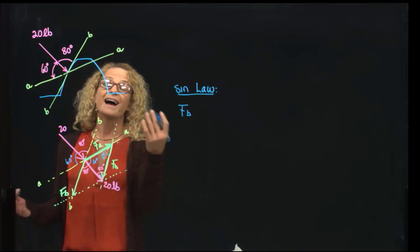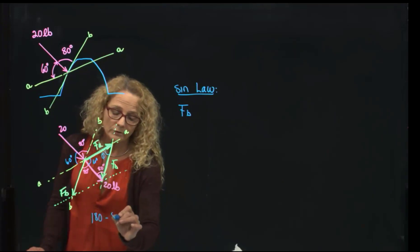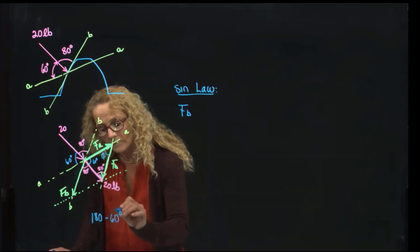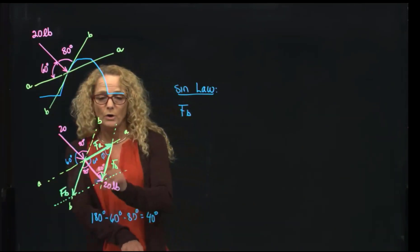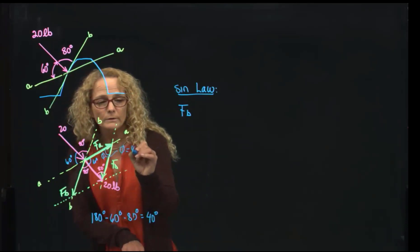all the angles have to add to 180 for a triangle, so it's 180 minus 60 minus 80, which equals 40 degrees. So, this angle over here, I already know that it's 40 degrees.